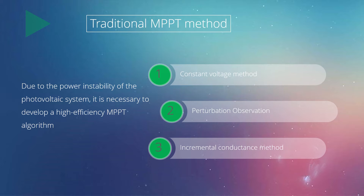Now let's look at the traditional power tracking methods of photovoltaic cells. Traditional methods mainly include three: the first is the constant voltage method, the second is the perturbation observation method, and the third is the incremental conductance method. Due to the poor stability of the photovoltaic system, it is necessary to develop a high-efficiency MPPT method.